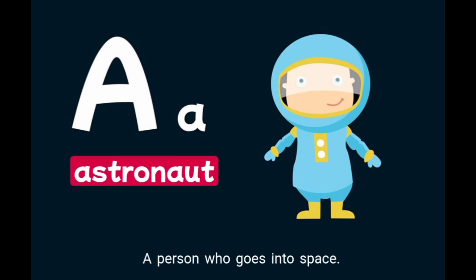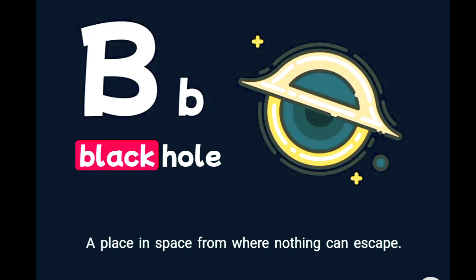A is for astronaut, a person who goes into space. B is for black hole, a place in space from where nothing can escape.